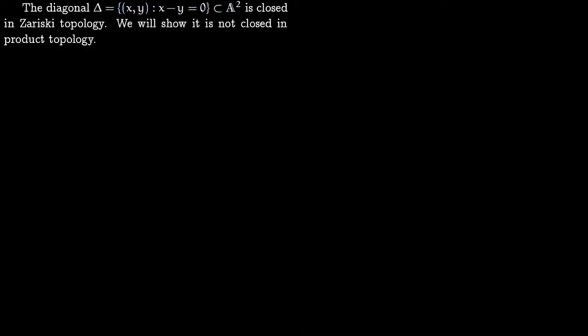The first thing we are going to talk about is the diagonal. The diagonal is in the form where x minus y equals 0, so both elements are equal. The general diagonal is written as (x, x), but here we write it in this form because you can see it is an algebraic set — it is defined by the zero of the polynomial x minus y equals 0. Since it is the zero of a polynomial, it is closed in the Zariski topology.